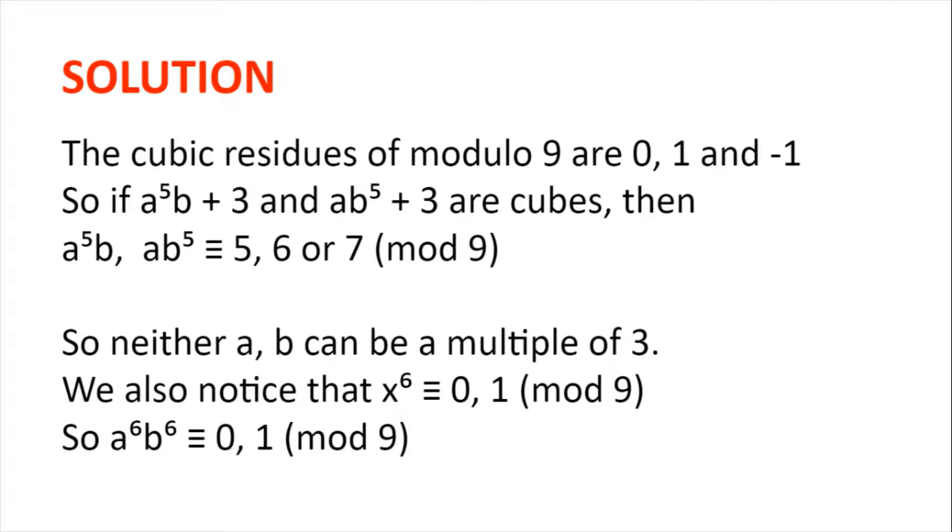We can show this either by using the Euler-Totient theorem, or by observing the constants of the polynomials 9m to the power of 6, 9m plus 1 to the power of 6, 9m plus 2 to the power of 6, and so on. So if a to the power of 6b to the power of 6 is a power of 6, it is congruent to 0 or 1 modulo 9.